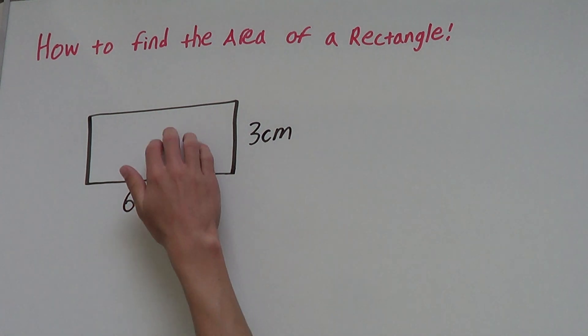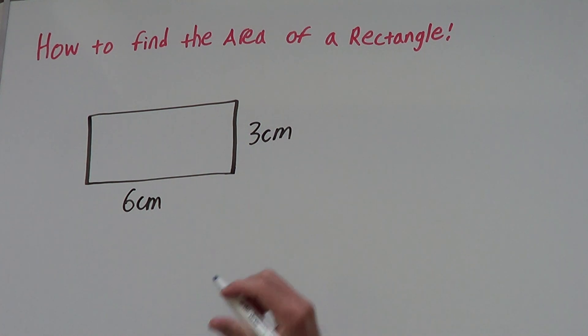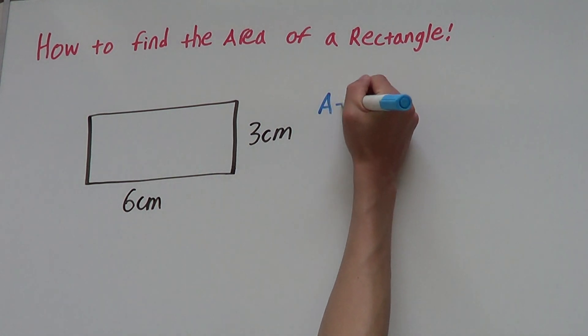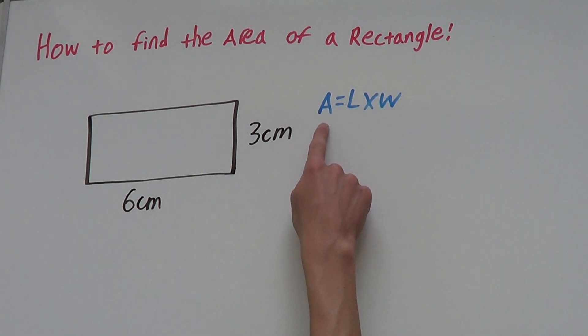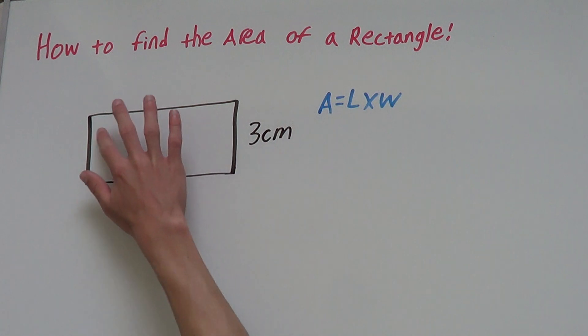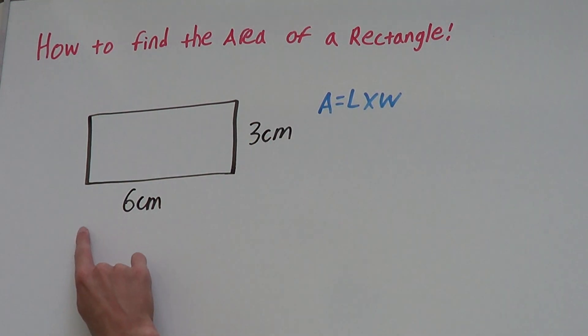We can find the area of this rectangle using the formula of the area of a rectangle. The formula is A equals L times W. What this formula means is area equals length times width. A stands for the area, L stands for the length, and W stands for the width.